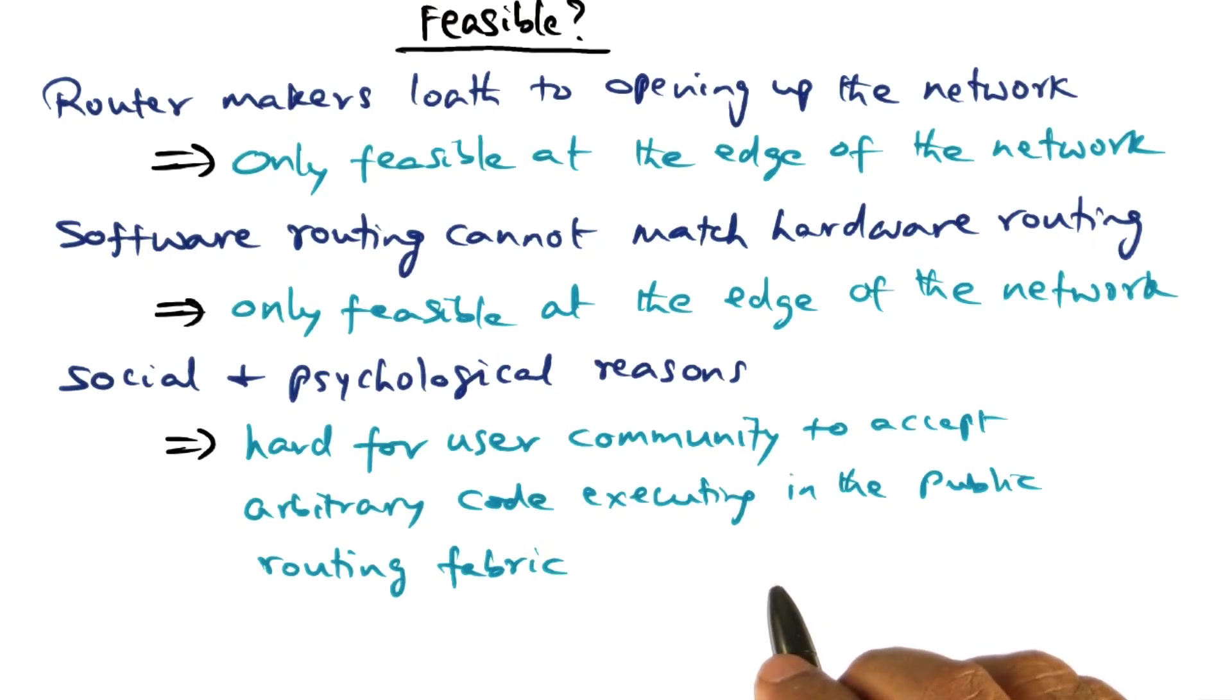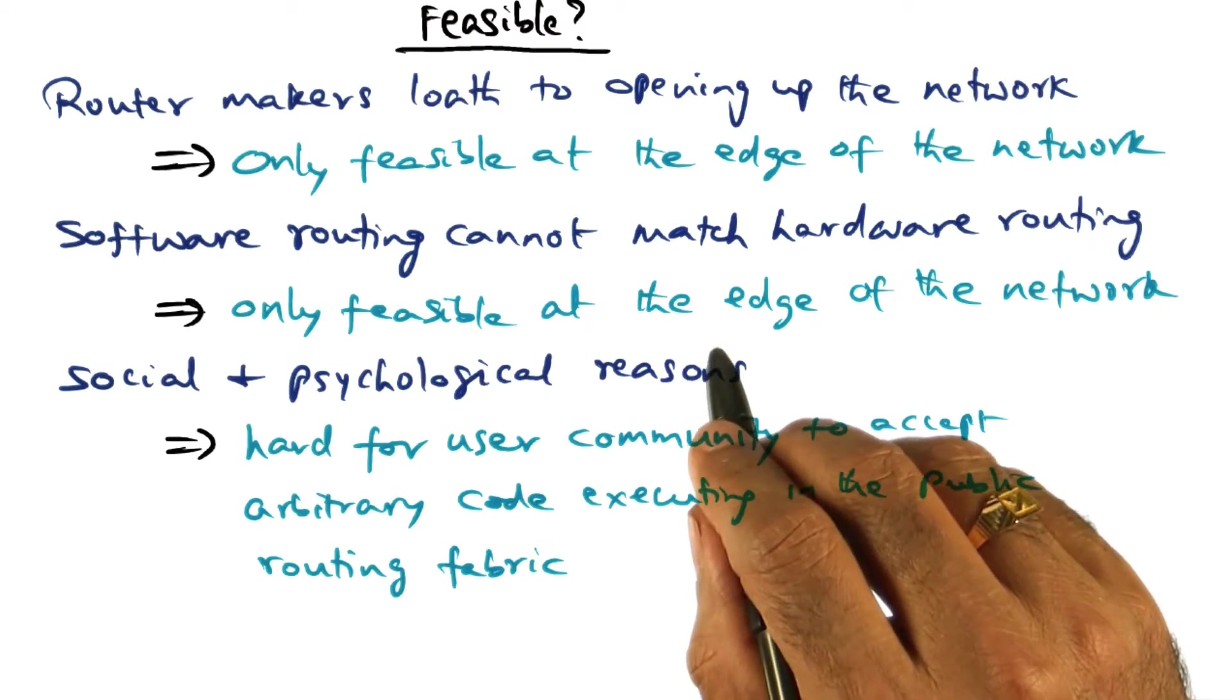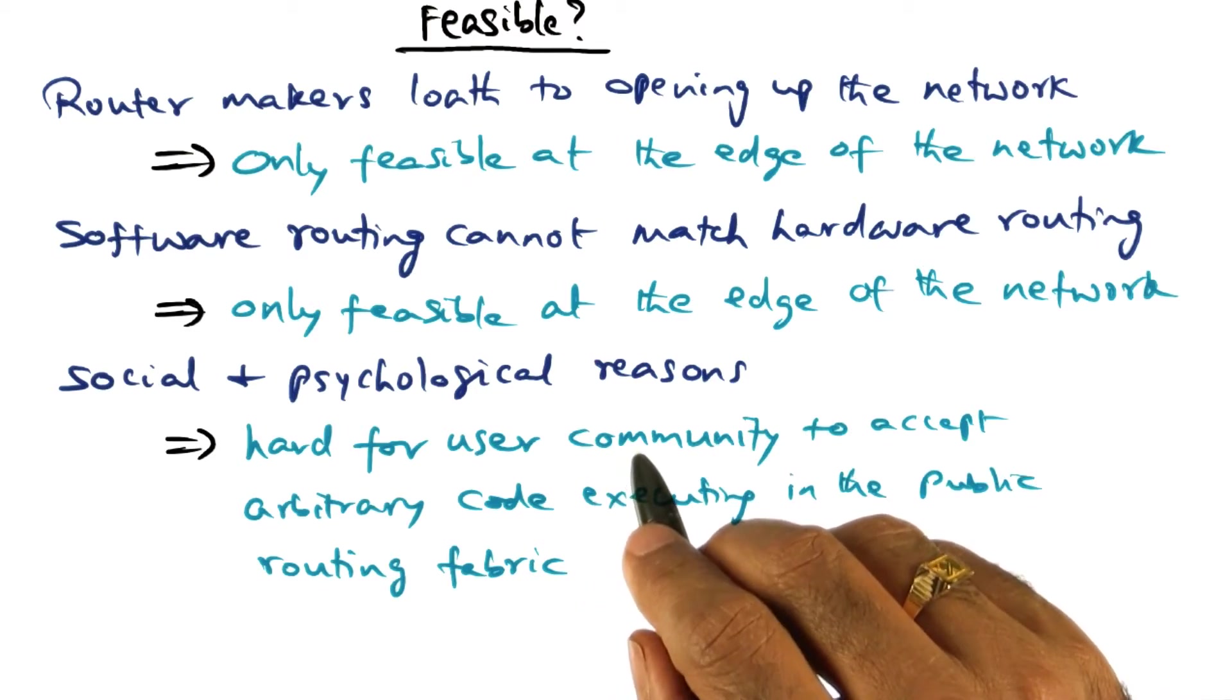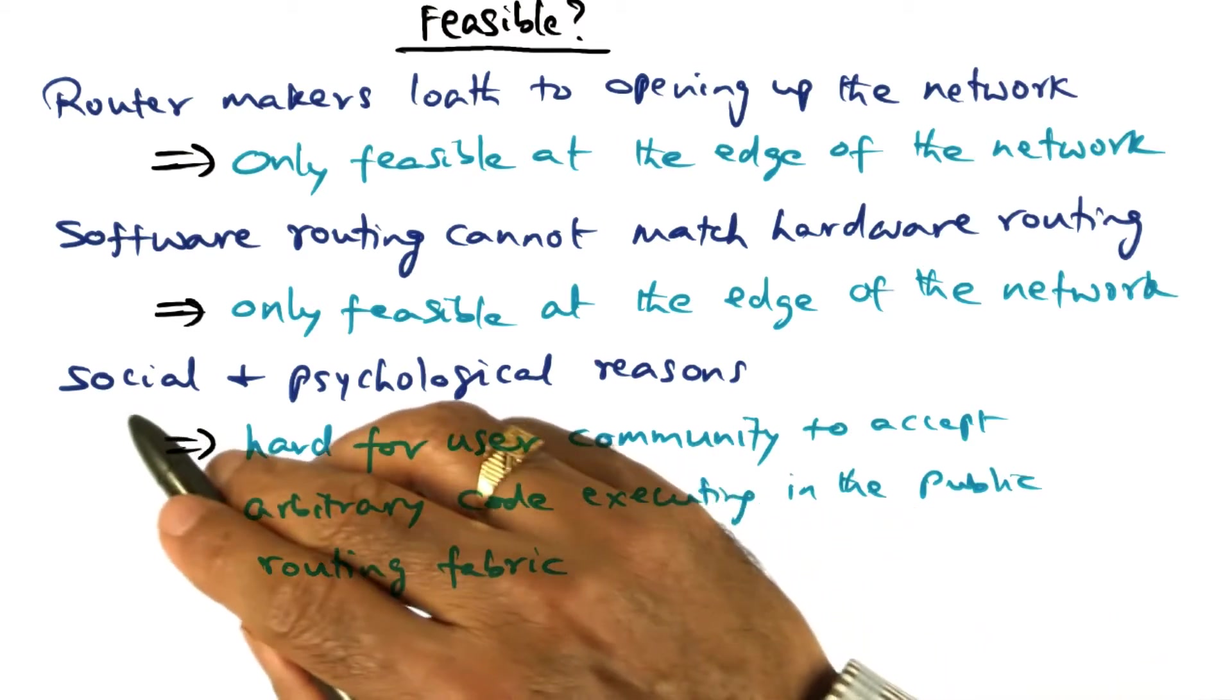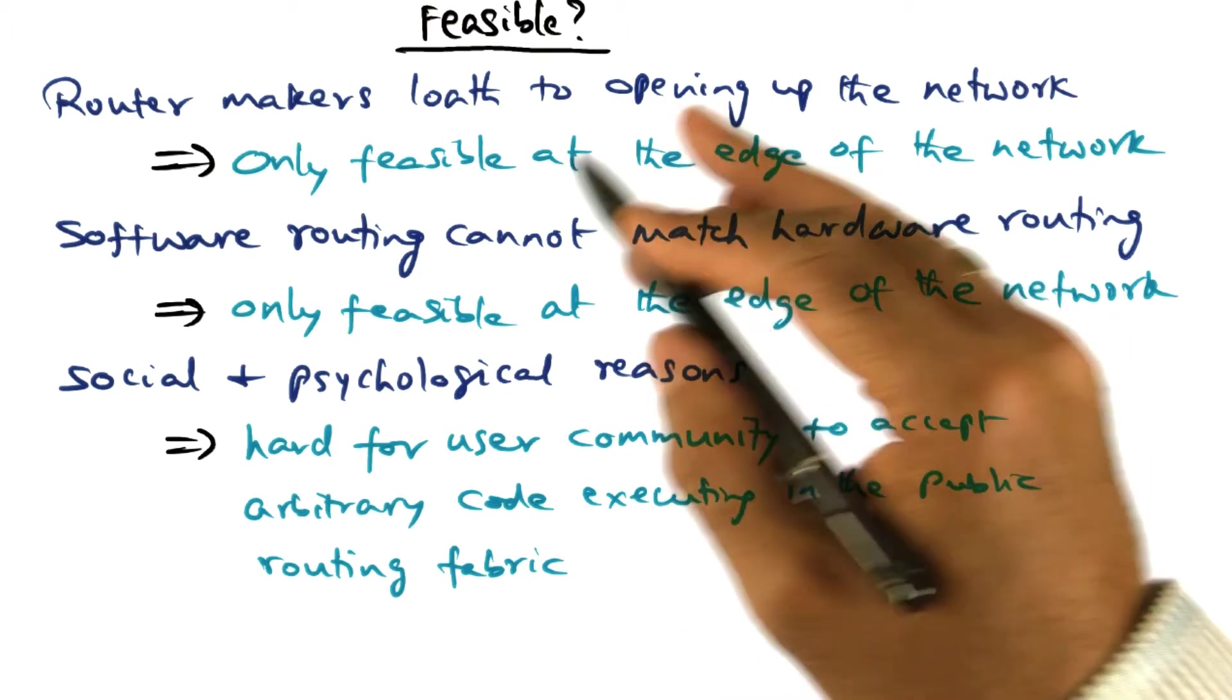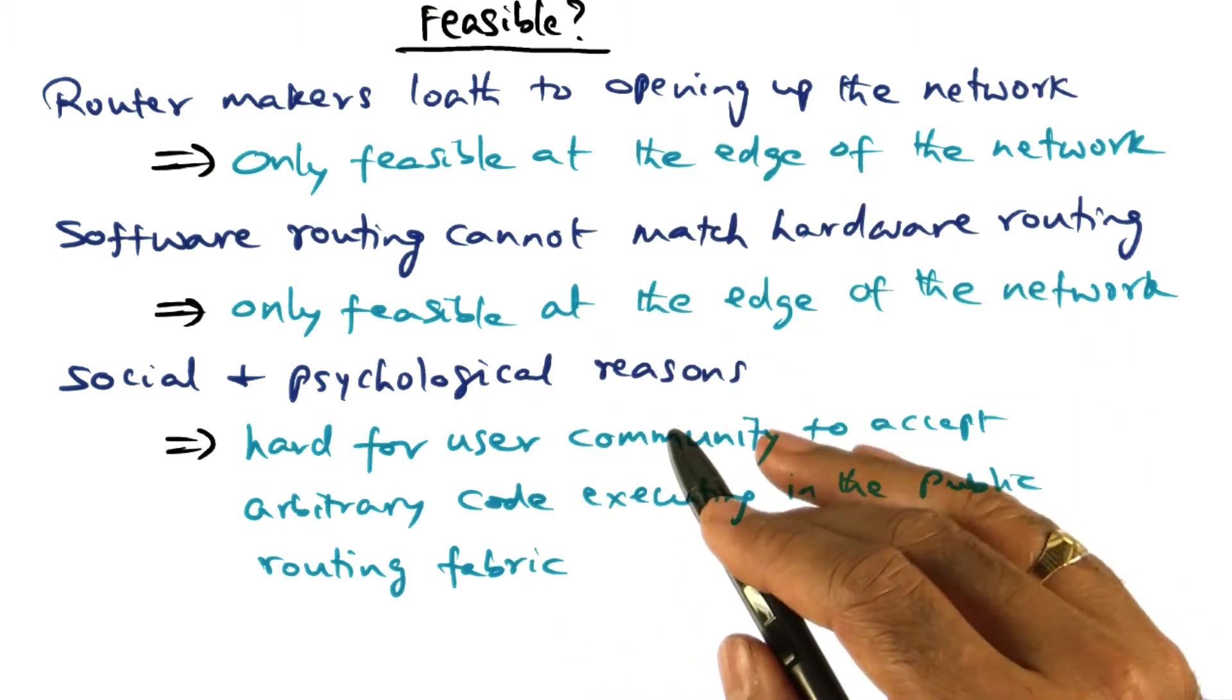Already we talk a lot about privacy and the fact that in corporate networks and university networks, we are losing a lot of privacy. People are watching what's going on. And now saying that the routers are going to do something intelligent or smart, processing packets, that might be a socially and psychologically unacceptable proposition. So these are reasons why it may make it difficult to sell the idea of active networks to the wide area internet.